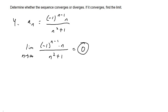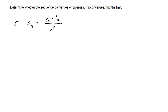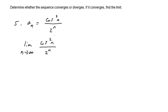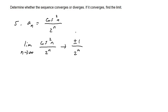For number five, a_sub_n equals cosine squared of n over 2^n. Cosine of n oscillates between negative 1 and 1, and squaring it keeps it bounded between 0 and 1. So we can compare this sequence to plus or minus 1 over 2^n. As n grows, the denominator grows much larger, so the fraction is bottom heavy and the limit is zero — the sequence converges to zero.